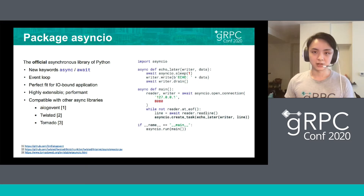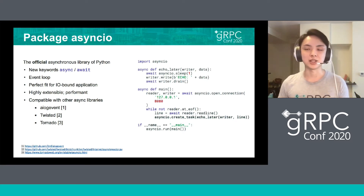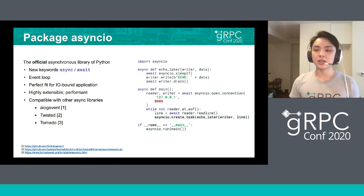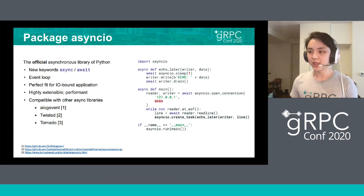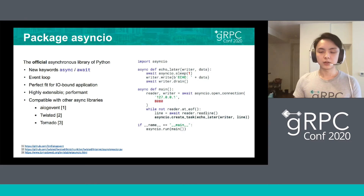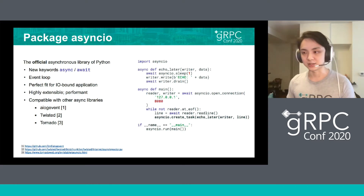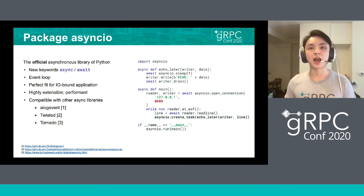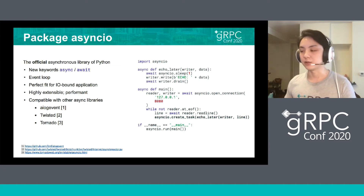Luckily, the Python maintainers also realized this is a problem. So they developed the official asynchronous library, which is named asyncio. And it introduces the new keywords async and await, just like JavaScript and C#. All the asynchronous libraries we saw before are trying to be compatible with this new official asynchronous library. On the right side is a short snippet showing how to open up a TCP connection and how to read and write from it using the asyncio semantic.